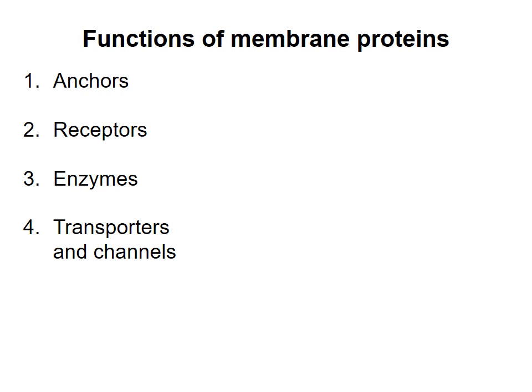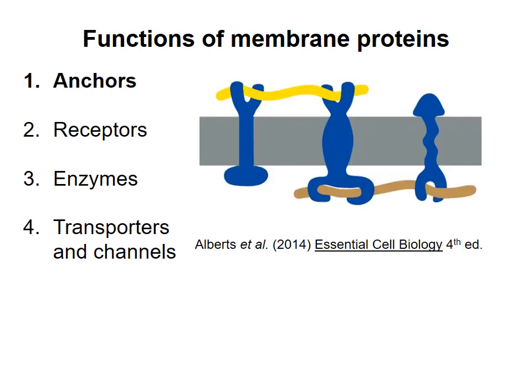Membrane proteins perform a number of functions. Four of the main ones are listed here. Anchor proteins can help organize other proteins in the membrane, control the shape of the cell, and position the cell relative to neighboring cells. Anchor proteins bind to other proteins on one or both sides of the membrane.